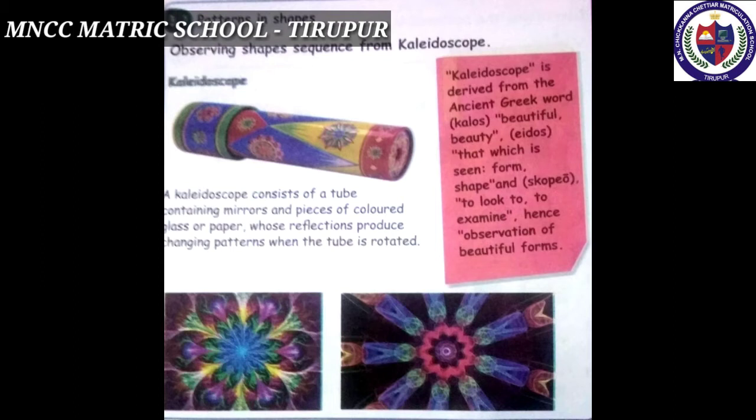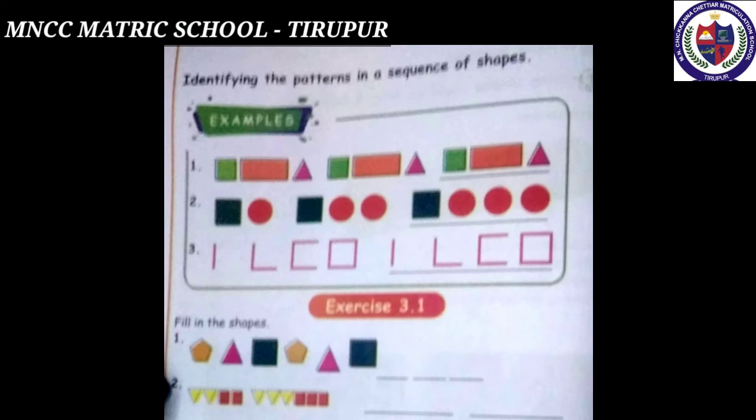A kaleidoscope consists of a tube containing mirrors and pieces of colored glass or paper, whose reflections produce changing patterns when the tube is rotated. See the two pictures. Next, we will identify the patterns in a sequence of shapes.